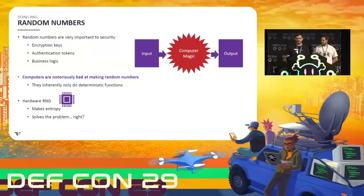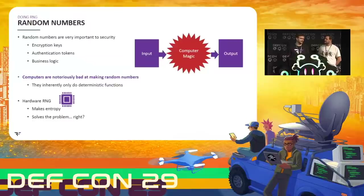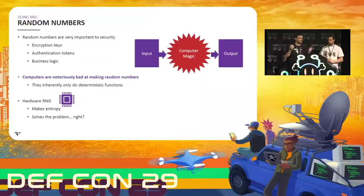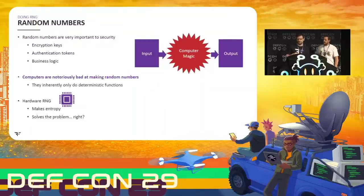That's how we started all this — thinking that hardware random number generators surely are the gold standard for generating entropy. As a quick aside, we'll be throwing the word 'entropy' around. It's not actually important that you understand the technical meaning of it; just assume it means some quantifiable amount of randomness. So like 128 bits of entropy — that means something, but it's not important for this talk to dig much further into that.